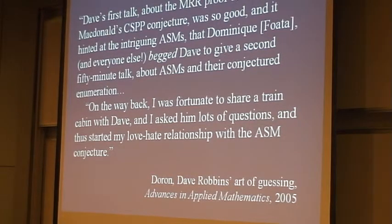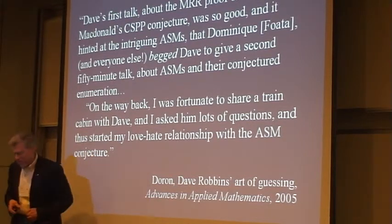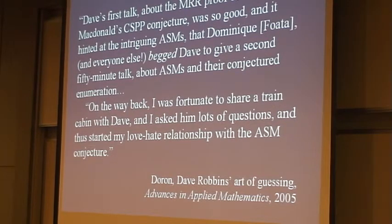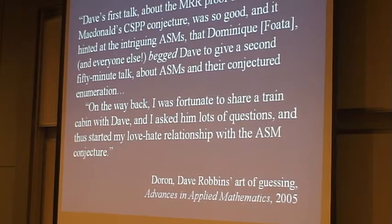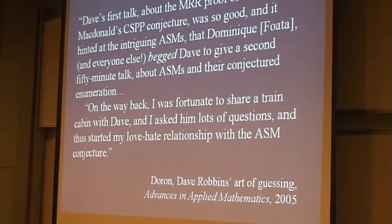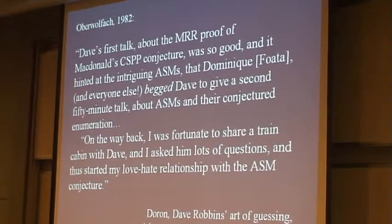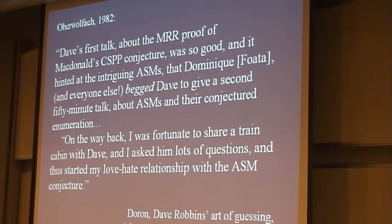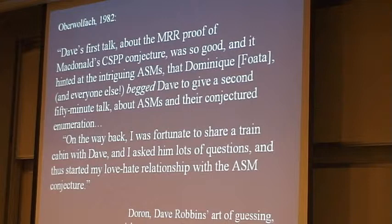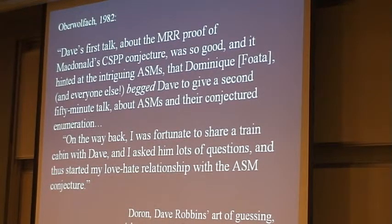Doran Zeilberger, a few years ago, wrote about his experience at that meeting. It was a very special meeting, and it's one in which Dave Robbins talked about his proof of MacDonald's conjecture. I have to include this quote from Doran's description: 'Dave's first talk about the MRR proof of MacDonald's CSPP — that cyclically symmetric plane partition conjecture — was so good, and it hinted at the intriguing alternating sign matrices, that Dominic Foata and everyone else begged Dave to give a second 50-minute talk.'